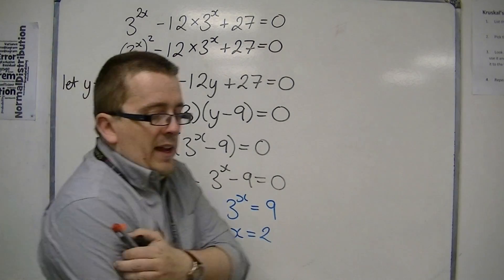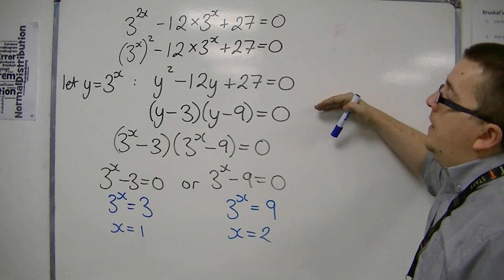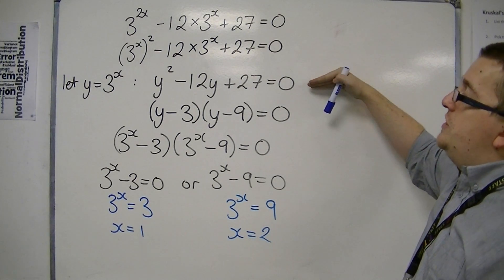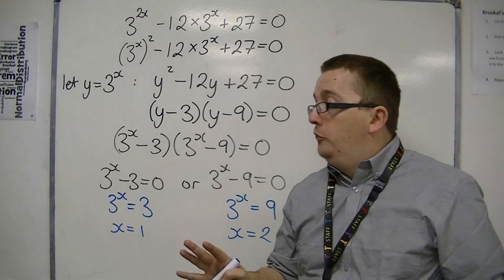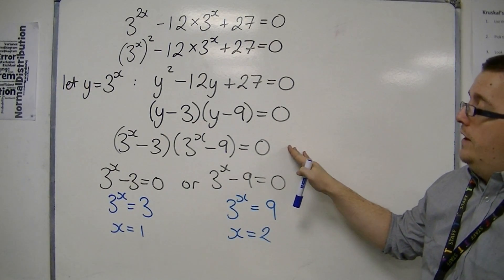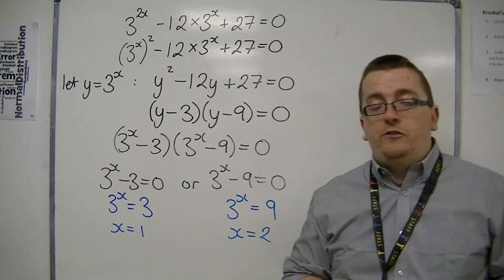So in a lot of cases, the question is likely to take you on this route and to make this substitution to get to this equation, which you then factorise or solve, put your 3 to the x back in, and then solve the two equations that you're left with.